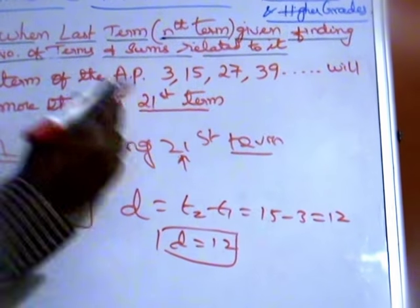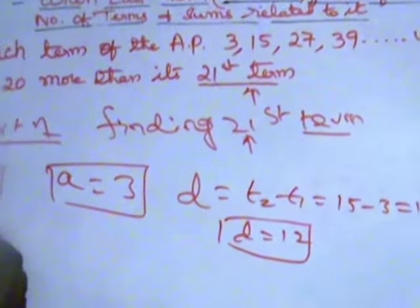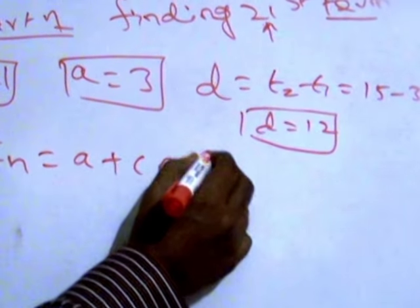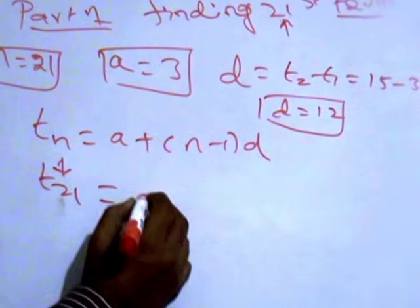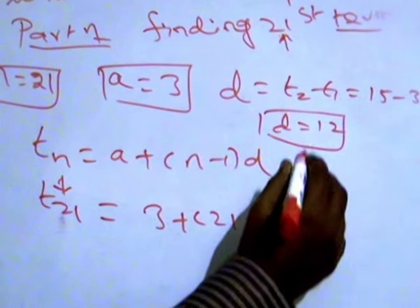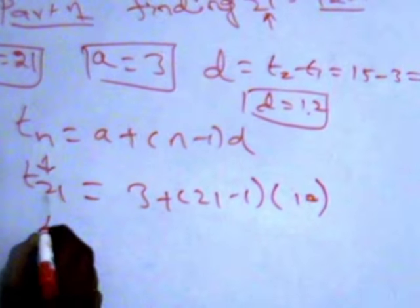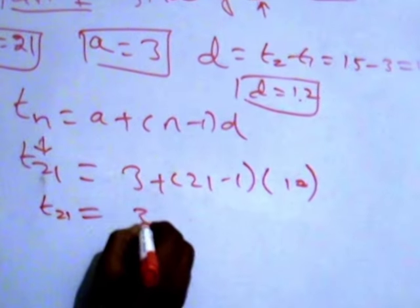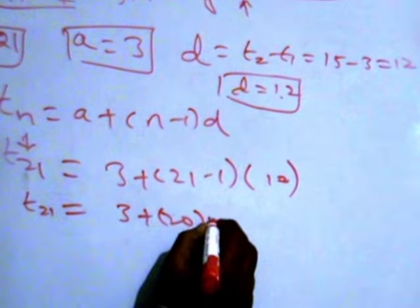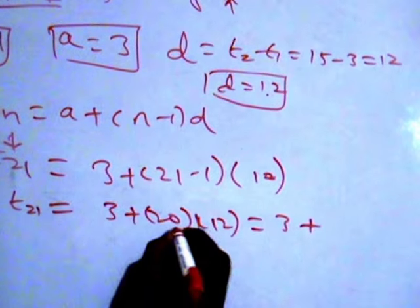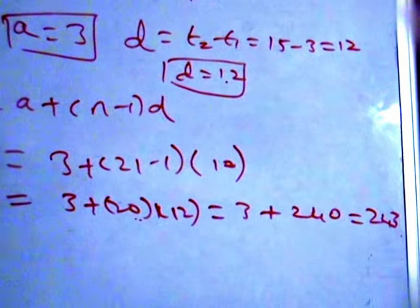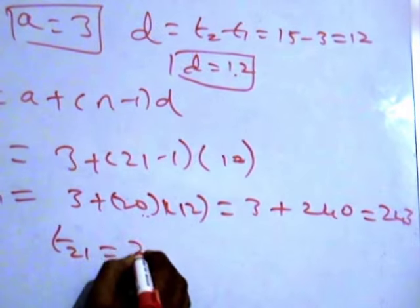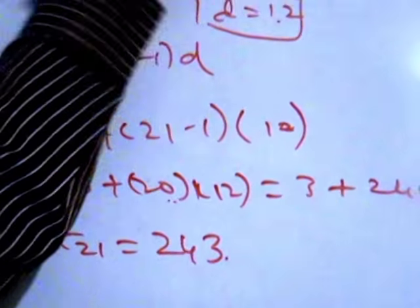Now we find the 21st term using the formula TN = A + (N−1)×D. So T21 = 3 + (21−1)×12, which is 3 + 20×12, which is 3 + 240, giving us 243. Therefore, the 21st term is equal to 243.